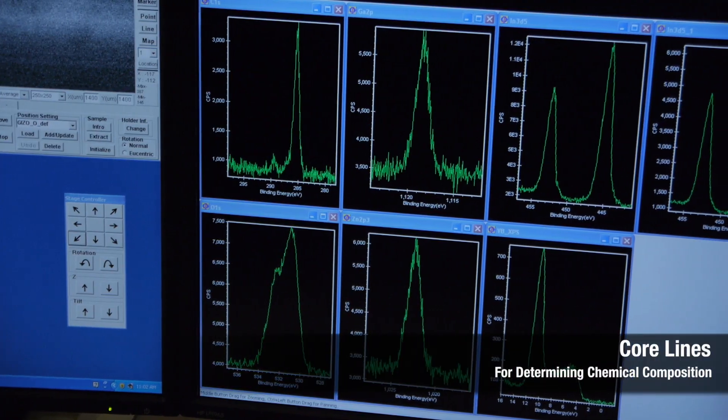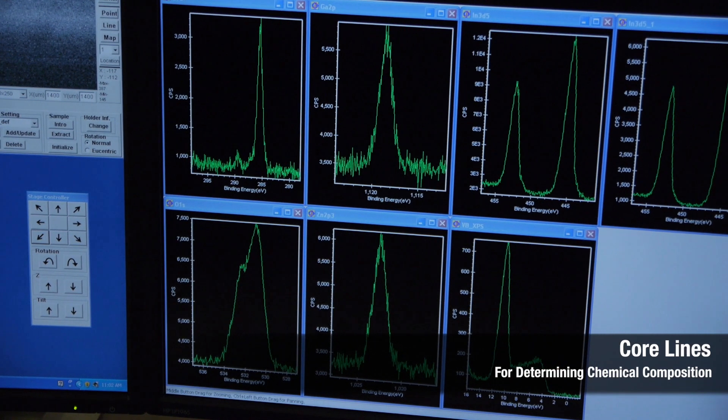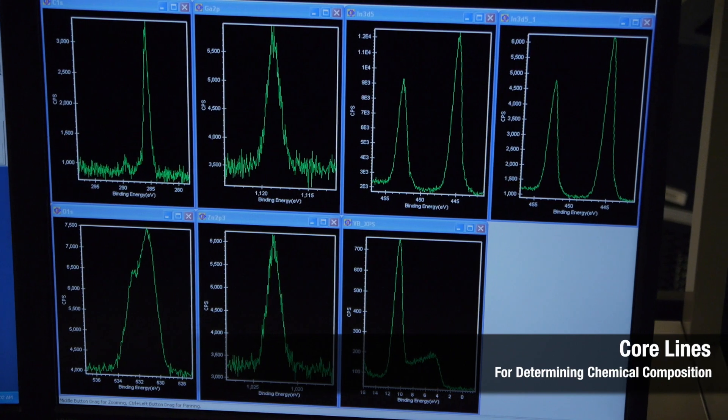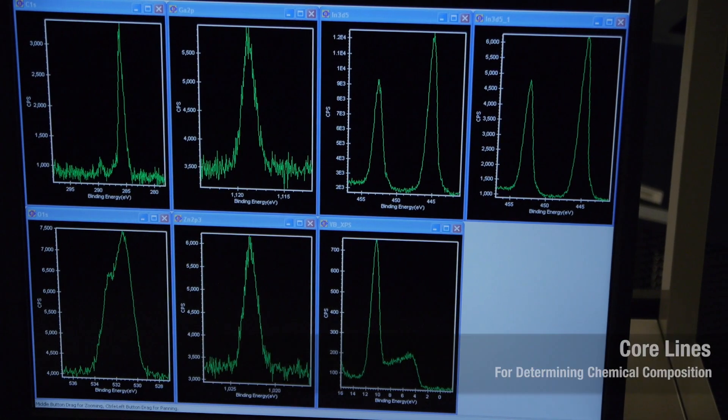This is what it looks like in raw form before we analyze it. Each one of these graphs is a specific region corresponding to a specific element. We have carbon, gallium,